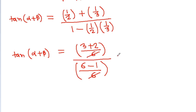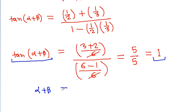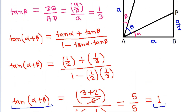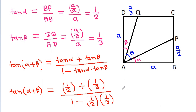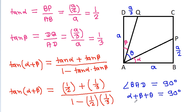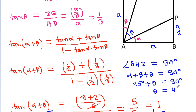The 6 cancels out, so it is 5/5, which equals 1. Therefore tan(alpha + beta) = 1, which means alpha + beta = 45 degrees. Since angle PAQ plus alpha plus beta equals 90 degrees and alpha plus beta is 45 degrees, theta will be 45 degrees.